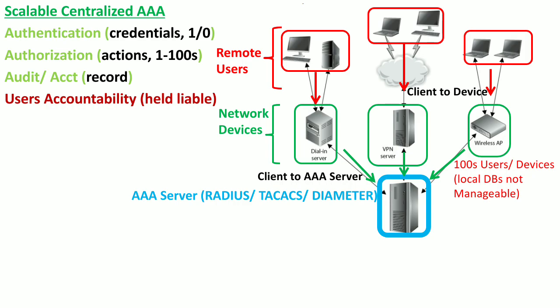Instead of maintaining its local database, the device sends the client's request to the AAA server, where a centralized database of user credentials is maintained. The AAA server then checks the credentials of remote users at a single location. If these credentials are verified, the remote users are allowed access to the network resources or devices. So the remote user is the client to the network devices, and the network devices are clients to the AAA server.